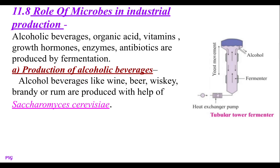Then 11.8, that is the role of microbes in industrial production. Alcoholic beverages, organic acids, vitamins, growth hormones, enzymes and antibiotics are produced by fermentation. That fermentation is done with the tubular tower fermenter, which is the apparatus known as the tubular tower fermenter.